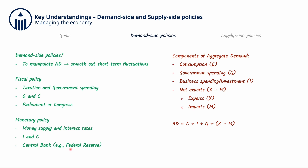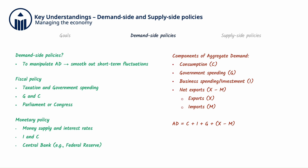For example, the Federal Reserve conducts monetary policy in the US. By manipulating components of AD such as C, G, or I, governments can change the level of AD, thereby increasing or decreasing economic activity.